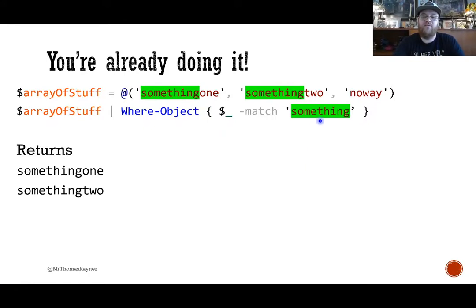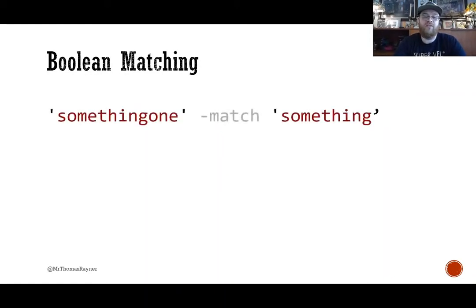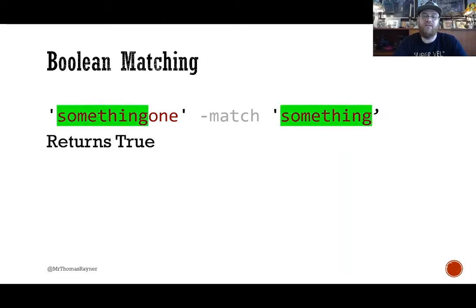This is the regular expression, and this is where it's found in those other strings — so you're already doing it. You can do Boolean matching as well. PowerShell has this match operator — this returns true because the regular expression is found in the string on the left. The match operator takes a string to examine on the left and a regular expression on the right. You're doing this already — you're a Regex expert already, ready for the rockstars.